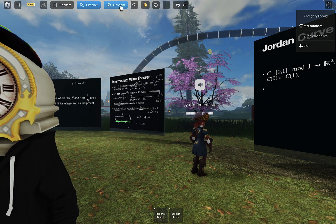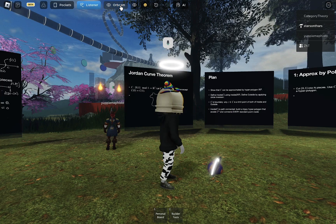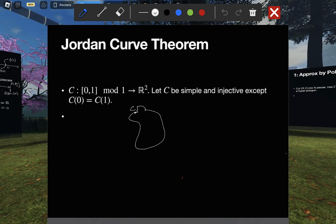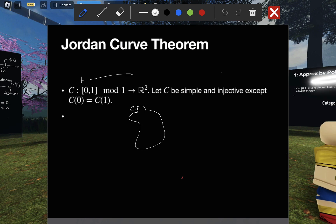The Jordan curve theorem. Given some curve C, which for the moment I'll just draw like this. But as we'll see, these are not the problematic curves for proving the statement. It's an injective function from a circle. The unit interval mod 1. So you identify the endpoints. Which is equivalent to this condition that C of 0 be equal to C of 1. And simple means that it has no self-intersections. No loops.